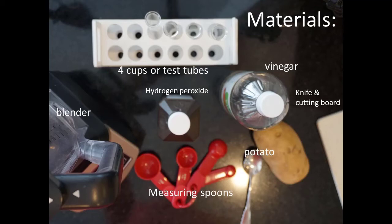Your materials for this week's lab are four cups or test tubes, vinegar, a knife and a cutting board, hydrogen peroxide which you can buy at the grocery store, a potato, measuring spoons, and a blender.